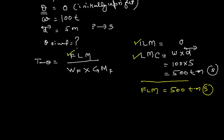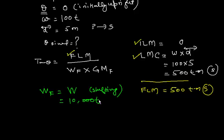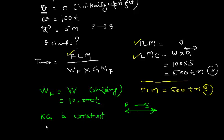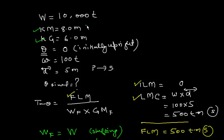The final displacement equals the initial displacement because we are only shifting weight, not loading or discharging, so Wf = 10,000 tonnes. Since the shift was in the horizontal direction (port to starboard), KG remains constant — KG only changes with a vertical shift. KM is also constant. Therefore GM = KM − KG = 8 − 6 = 2 metres, and GMf = 2 metres.